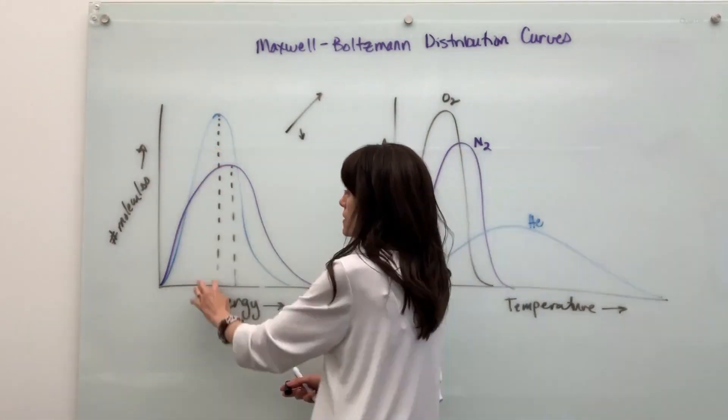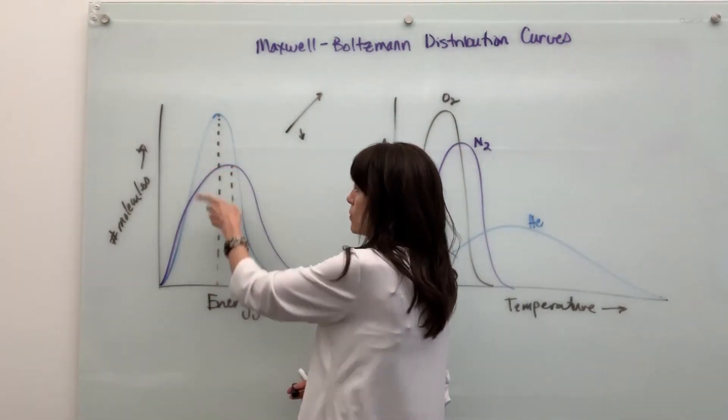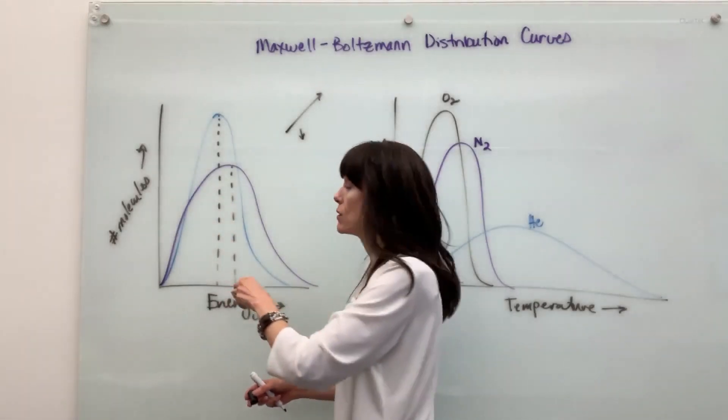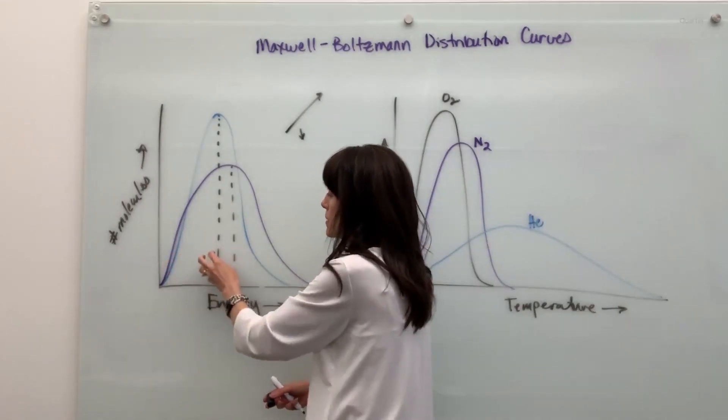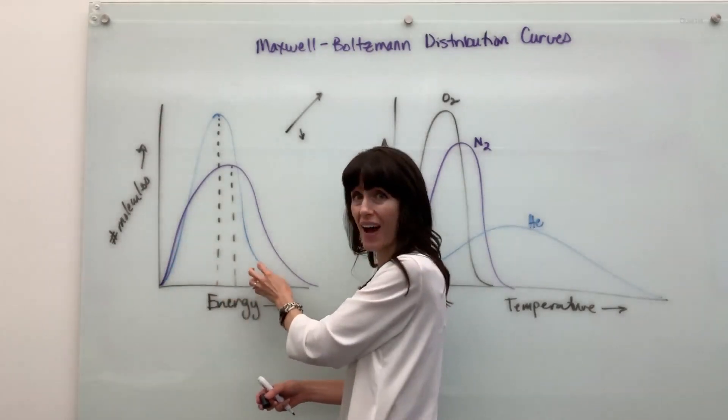Whereas this first substance, the blue one, has a lower average energy, which means you're going to have more atoms down here in the low, some in the middle, and fewer at the high energy.